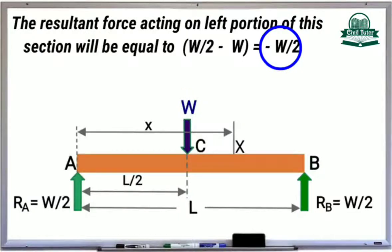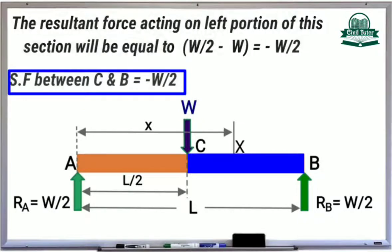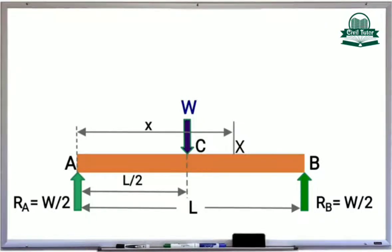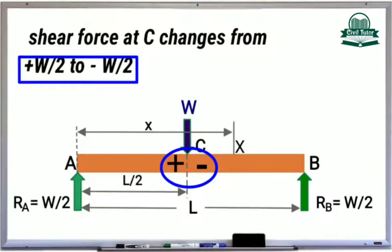This force will remain constant between C and B since there is no other extra load between C and B, and shear force between C and B will be equal to minus W by 2. We can conclude that the shear force at C changes from plus W by 2 to minus W by 2.